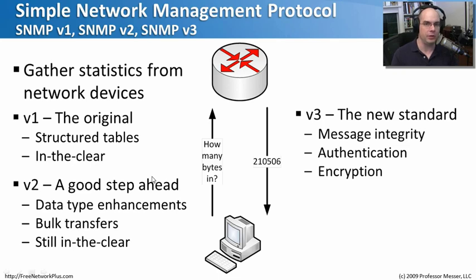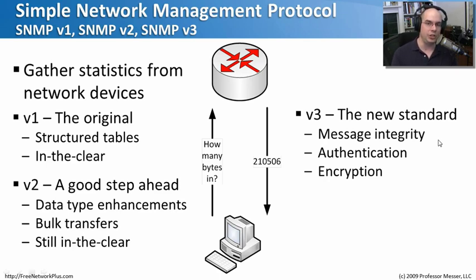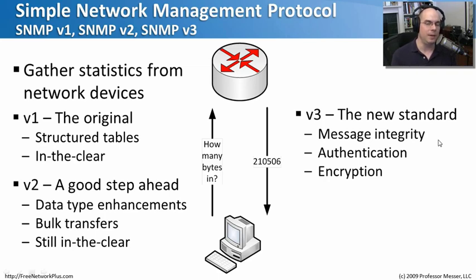The latest version is SNMP version three, which added capabilities primarily from a security perspective. First, it added message integrity — when we receive an SNMP response, we know the data within that packet was not modified. It's also authenticated, so we can verify the data really did come from who we asked. And perhaps most importantly, the data can be encrypted, so even if somebody intercepts it, they can't make heads or tails of it. In large enterprise environments, SNMP version three is preferred primarily for these security reasons.